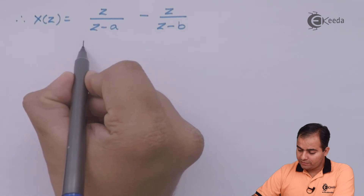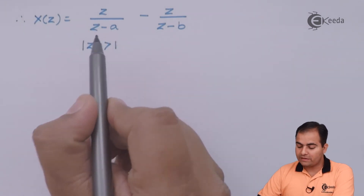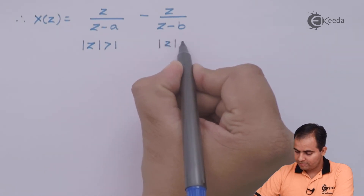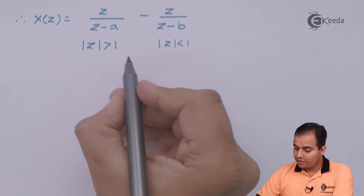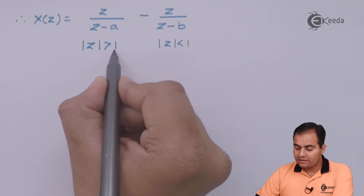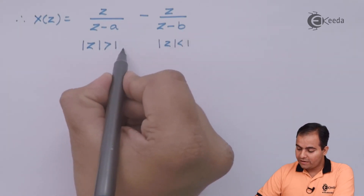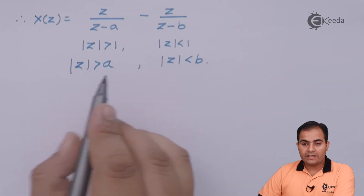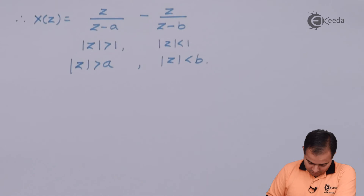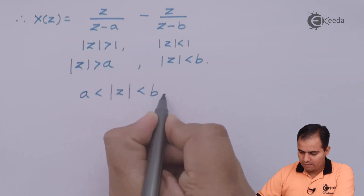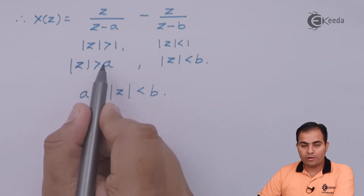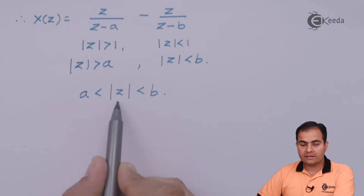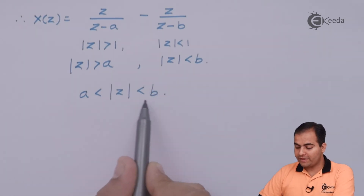Z/(Z-A) gives ROC |Z| > A — the exterior of a circle of radius A — and the second term gives ROC |Z| < B, interior of a circle of radius B. Combining, the ROC is the annular region A < |Z| < B, i.e., between the two circles of radii A and B.